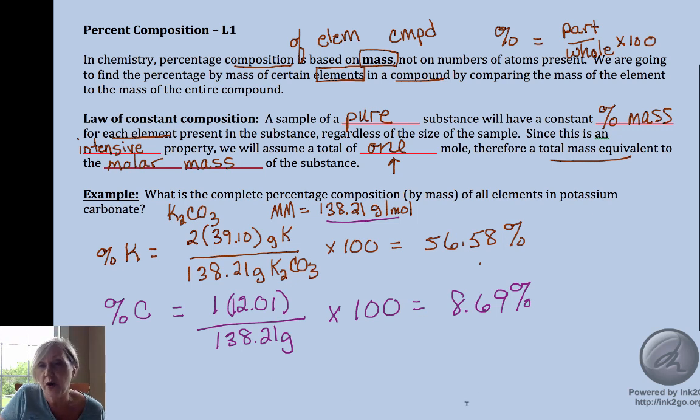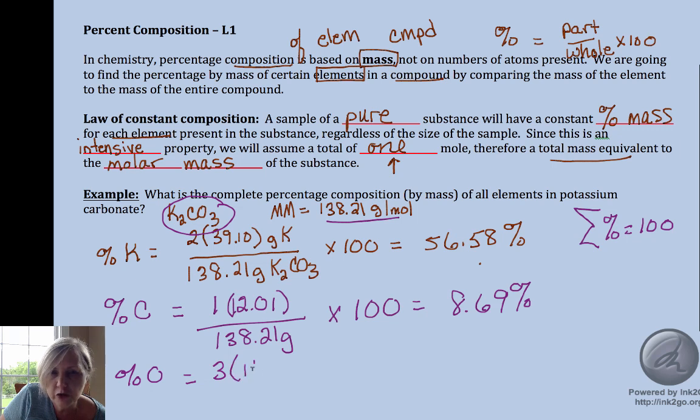The sum of all percents have to equal 100. So you can add these up, subtract from 100 and get your value. I'm just going to go ahead and set it up to make my point of how we do these. When we calculated the molar mass, three oxygens each contributed 16 grams per mole to the total molar mass times 100, and I get 34.73.